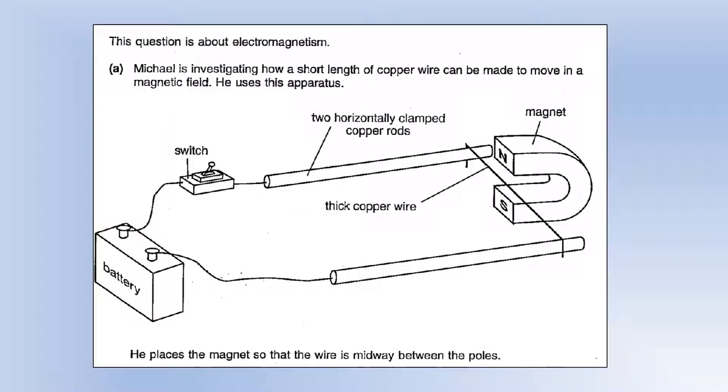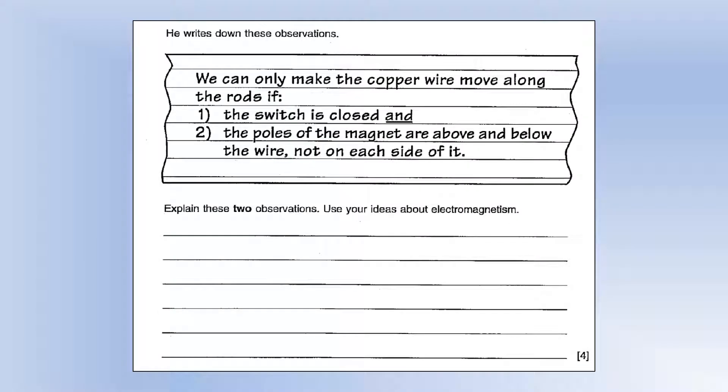This question is about electromagnetism. Michael is investigating how a short length of copper wire can be made to move in a magnetic field. And he's doing it using this apparatus. So we've got a battery, a switch, some horizontally clamped copper rods, we've got a thick copper wire, and we've got a magnet. He places the magnet so the wire is midway between the poles. So he's made some observations. So he can only make the copper wire move along the rods if the switch is closed and the poles of the magnet are above and below it, not on each side.